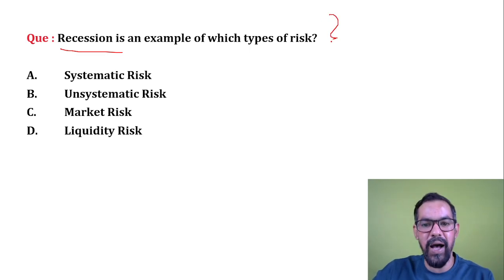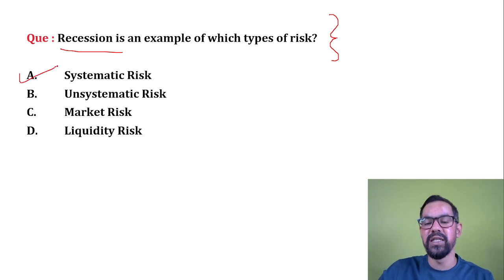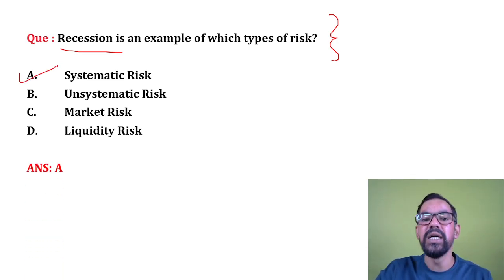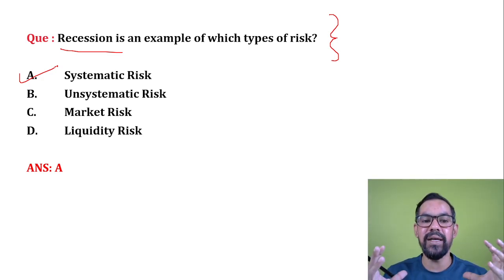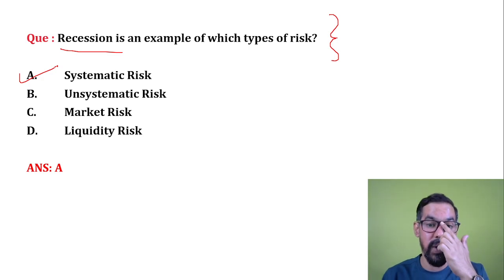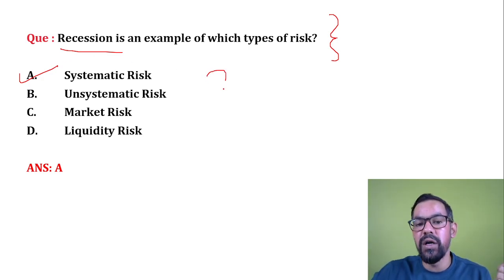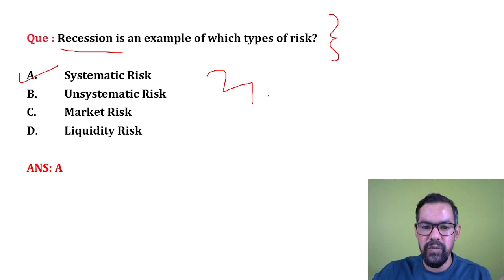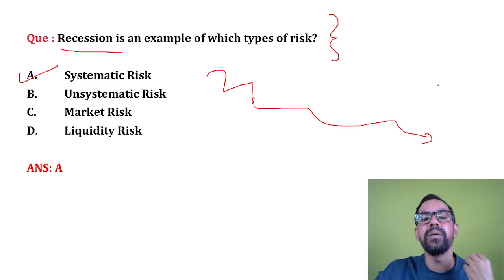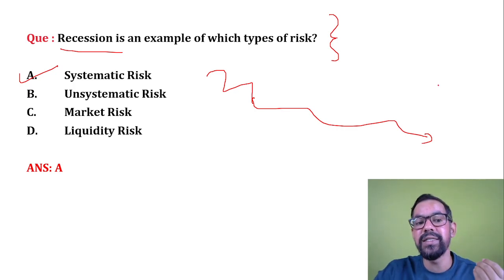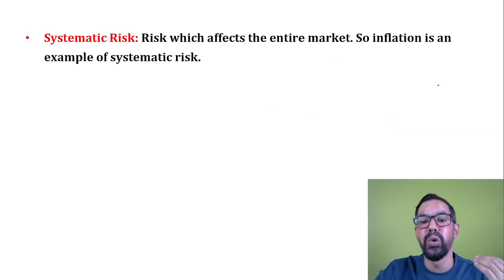Next question: recession is an example of which type of risk? The correct answer is systematic risk. Whenever recession is announced, it has a worldwide impact. When the world economy continuously decreases over two or more quarters, that is generally known as recession. It has a broader impact, which is why it is systematic risk — unavoidable in nature.